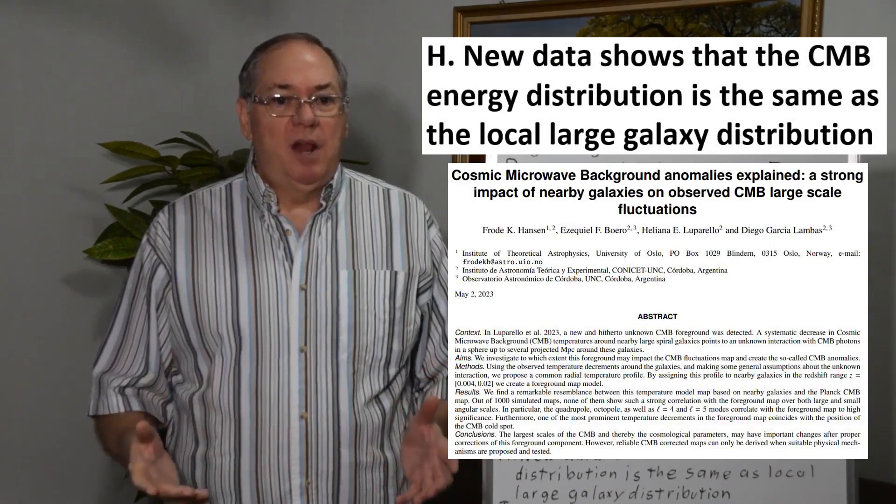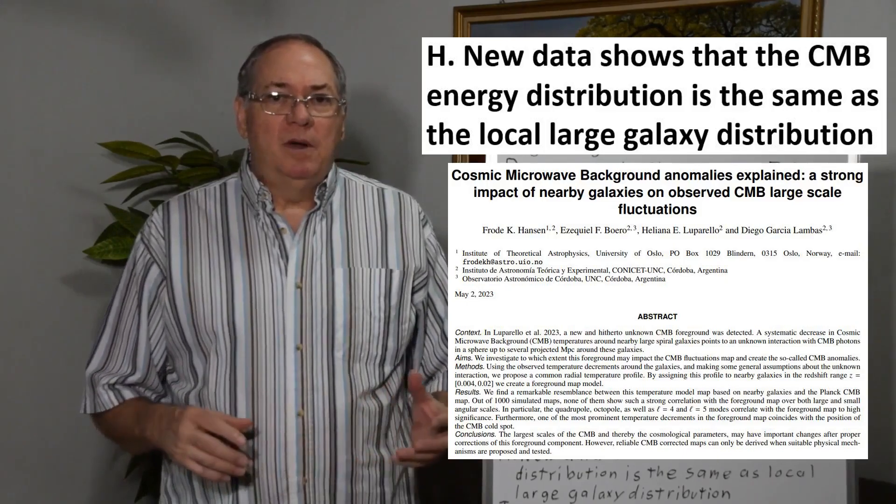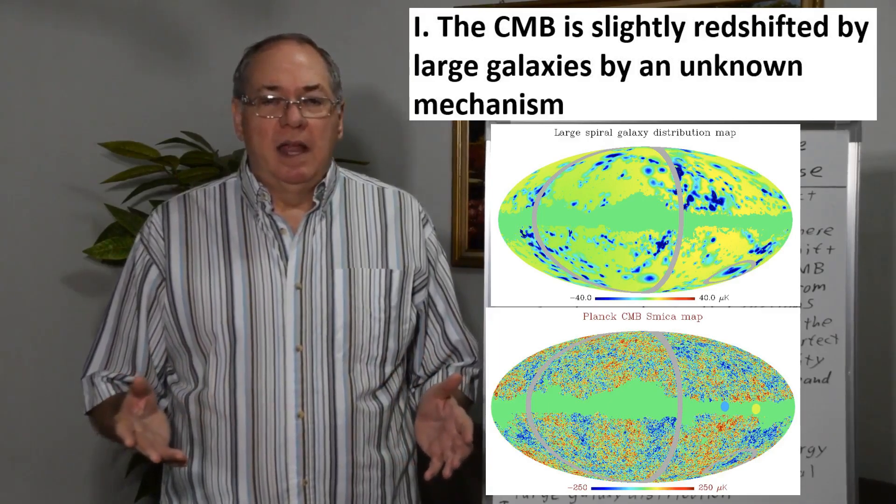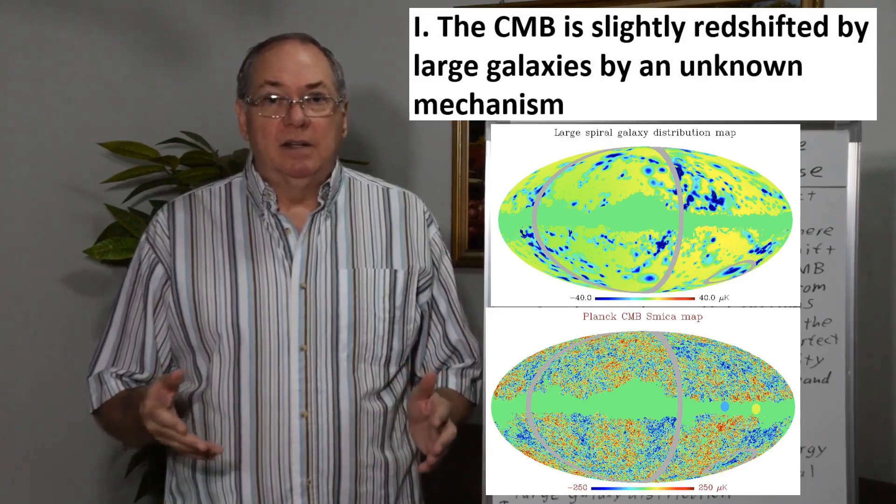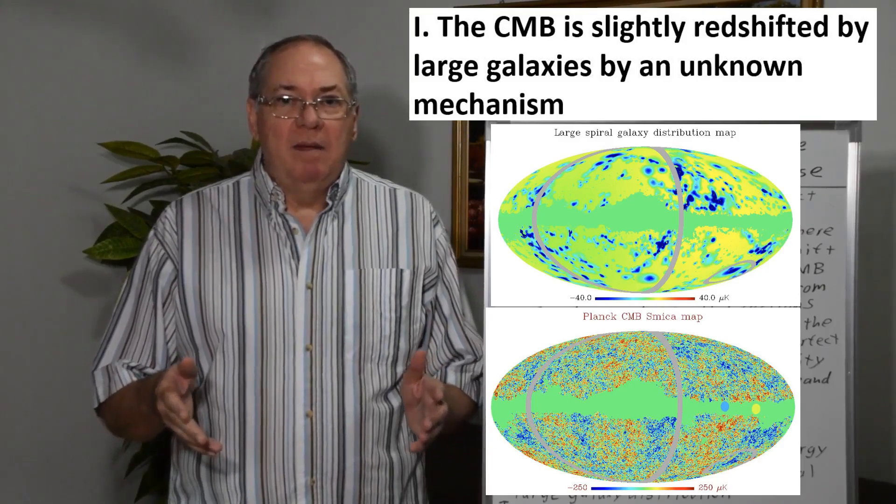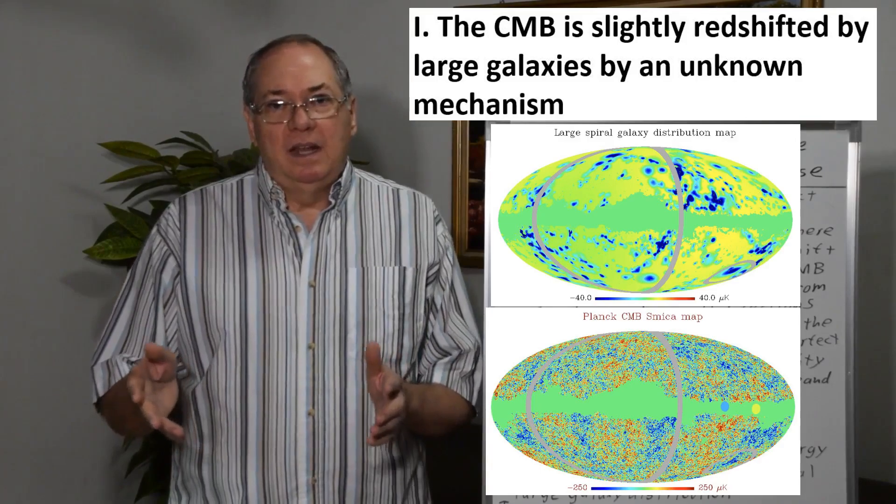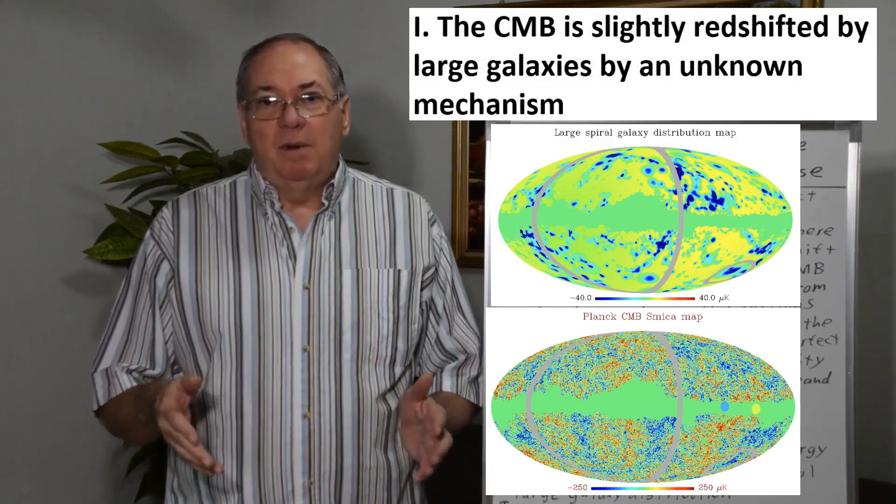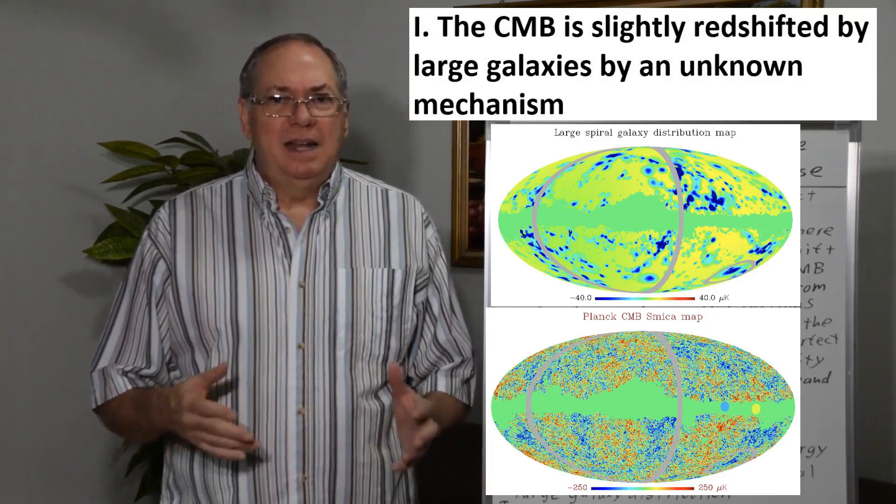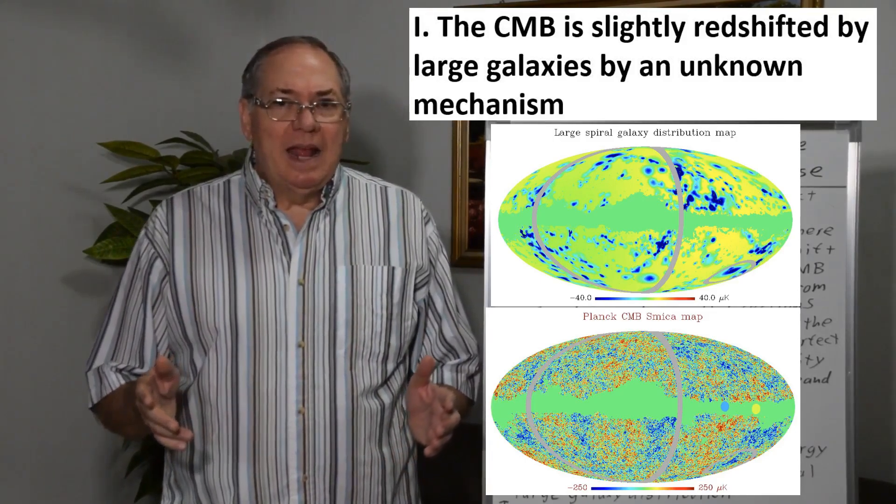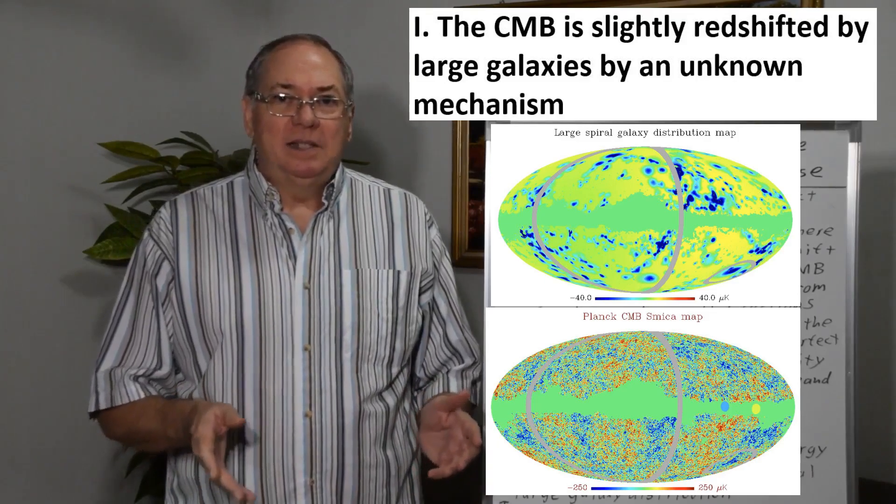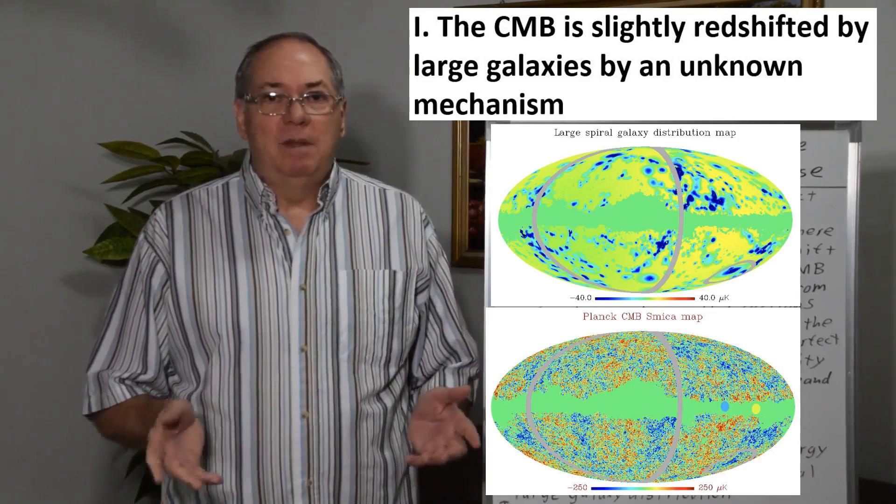And what this paper looked at was it looked at the large galaxies in our local area around 60 megaparsecs, around 200 million light years. And so what they found was if you look at the density of galaxies about 8.5 kiloparsecs in size, somewhat smaller than the Milky Way galaxy but not too tiny, that the distribution of galaxies was the same in appearance as the map of the microwave background from the Planck satellite.